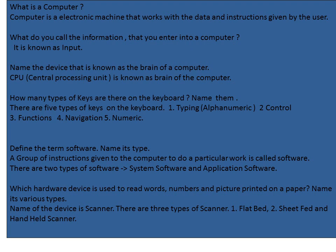Which hardware device is used to read words, numbers, and pictures printed on paper? Name its various types. Like a camera is present in a machine — that machine is known as a scanner. There are three types of scanner: flatbed, sheet-fed, and handheld scanner. Thank you. We have completed the chapter one question answers.